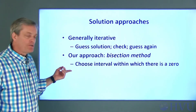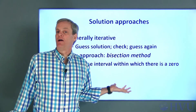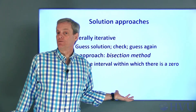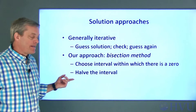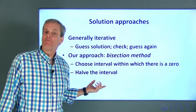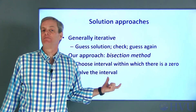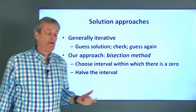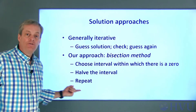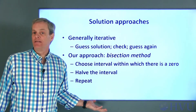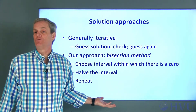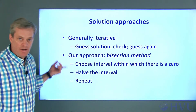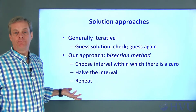The bisection approach begins by choosing an interval on the x-axis that contains the solution. The interval is then cut in half, and the section of the interval that contains the solution is identified. Then you repeat the process of halving the interval until you get close enough to the solution. Let's go through this process for an example function.